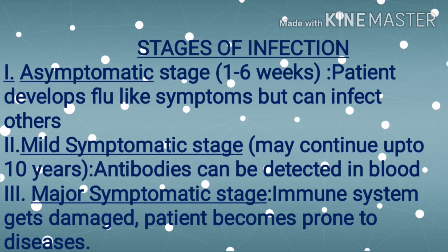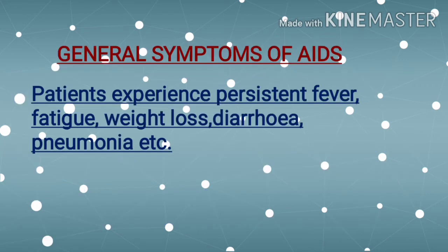The major symptomatic stage results in severely damaged immune system, and the condition has now progressed from HIV disease to AIDS. The patient becomes prone to a variety of diseases. General symptoms of AIDS include persistent fever, fatigue, weight loss, diarrhea, pneumonia, fungal infections, and development of different types of tumors.